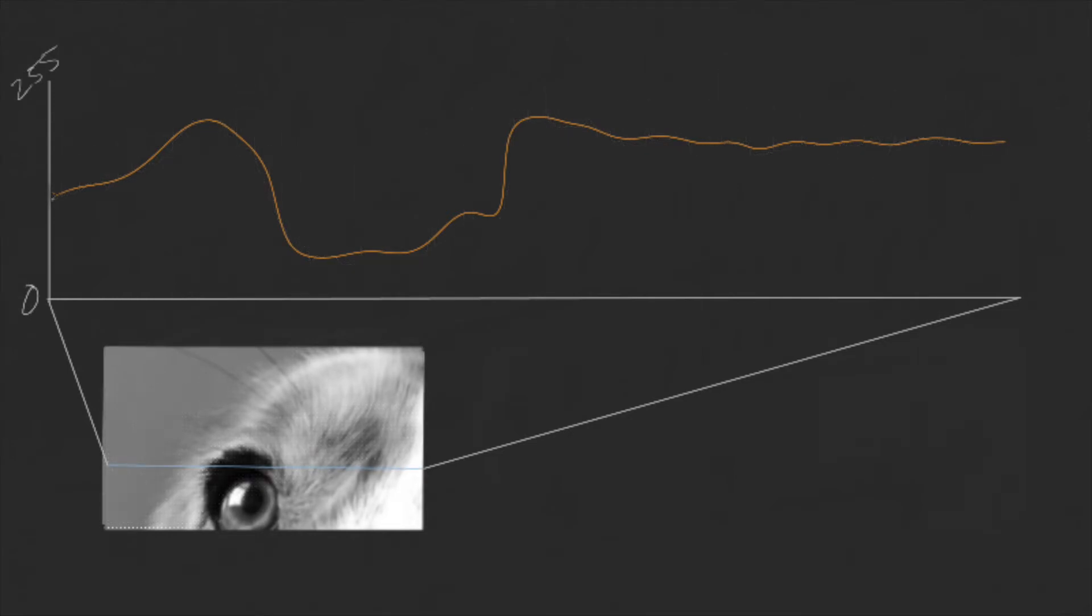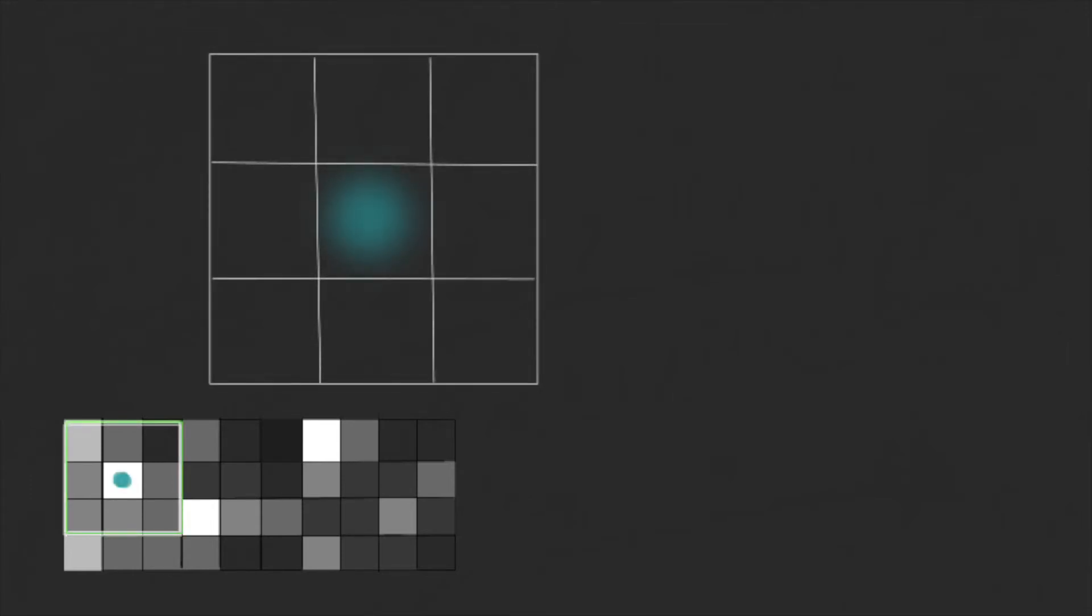The simplest way to make a smoothing filter is by using the average. In this example, let's consider a kernel of one pixel around the target, so it looks like this. In the center we have the target location.